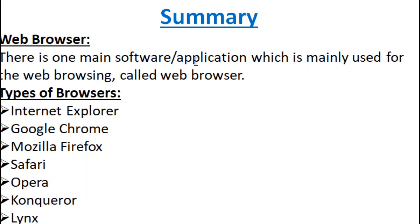Summary: There is one main software or application which is mainly used for web browsing, called a web browser. A web browser is an interface between the hardware system and the internet, used to access web pages through the internet.